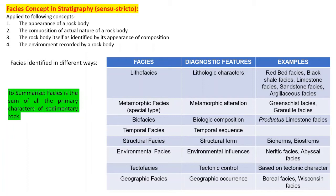Then there is temporal facies, which relates to time sequences — in what time sequence have the rocks formed. Structural facies includes structural forms such as bioherms and biostroms. Environmental facies considers environmental influences: water depth and the type of environment of formation — for example, neritic facies, abyssal facies, and shelf facies.